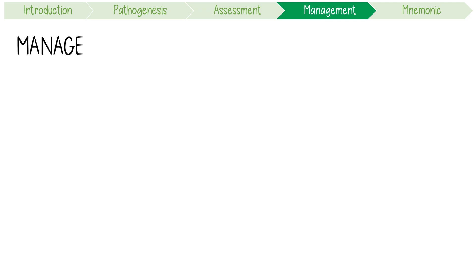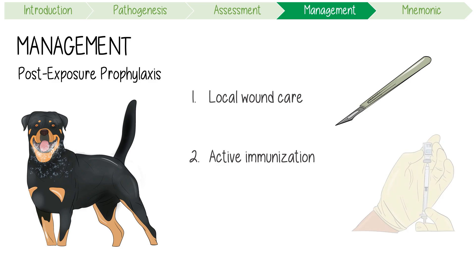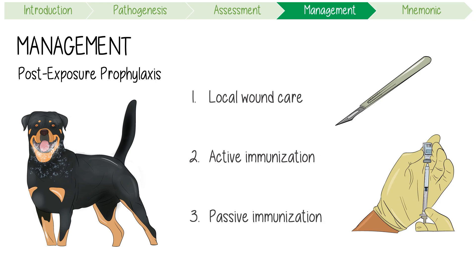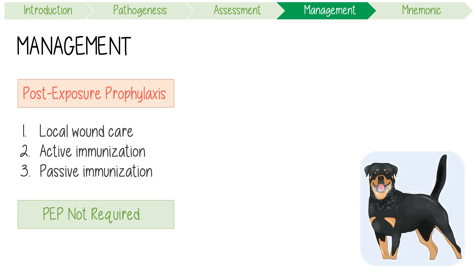For management, the focus is on post-exposure prophylaxis. Since there's no effective therapy for rabies, it's important to prevent the disease after an animal bite. This involves three things: first, local wound care such as cleaning and debridement; second, active immunisation with two available purified inactivated rabies vaccines; and finally, passive immunisation in the form of rabies immunoglobulin, also known as RIG. Keep in mind that prophylaxis isn't always required.